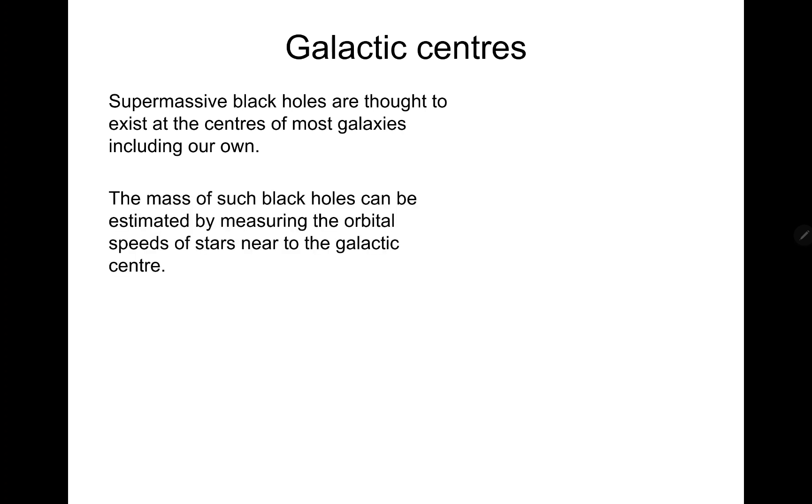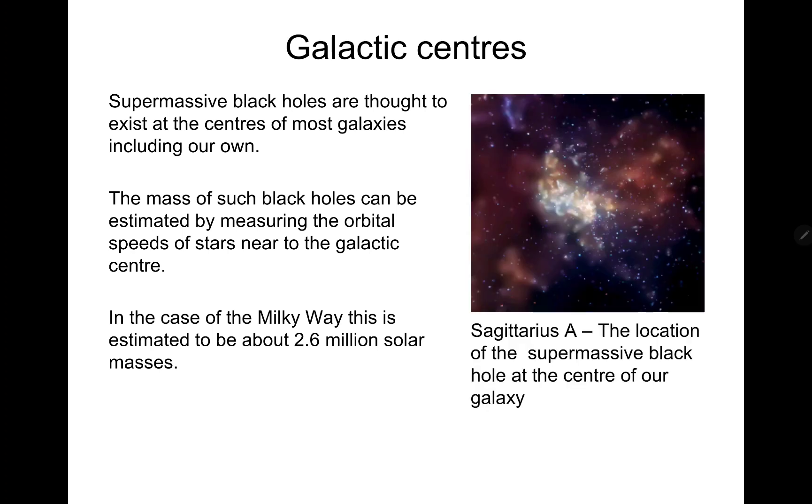Alright, let's move on. So galactic center. Supermassive black holes are thought to exist at the centers of most galaxies, including the Milky Way. And the mass of such black holes can be estimated by measuring the orbital speeds of stars closer to that center. So in the case of the Milky Way, it's estimated to be around 2.6 million solar masses. If you're interested, Sagittarius A is the location of the supermassive black hole at the center of the Milky Way.